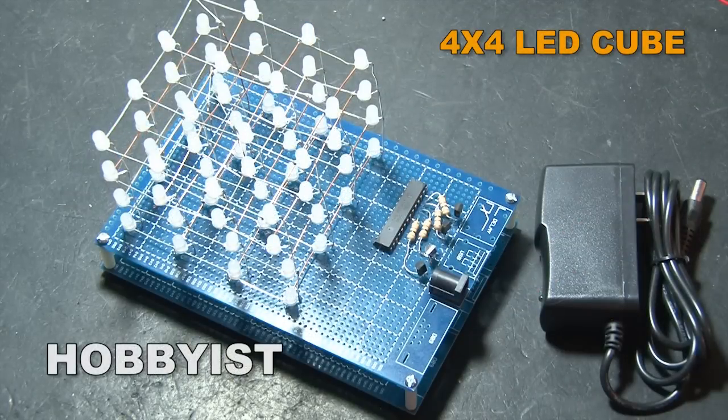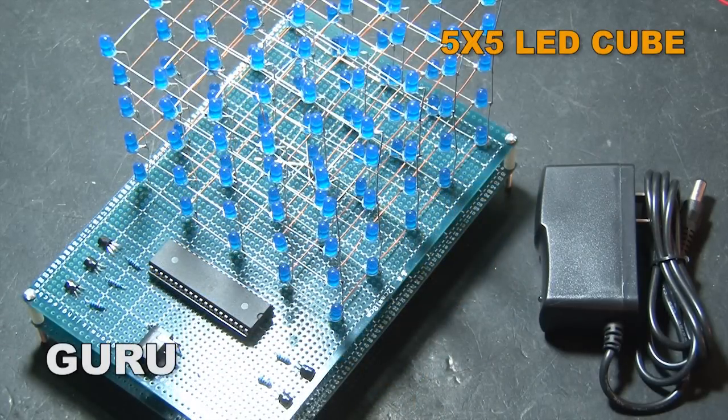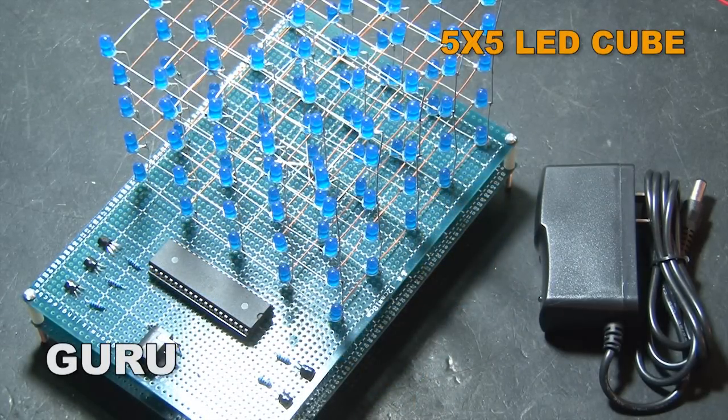The hobbyist kit includes everything you need to build a 4x4 LED Cube. This one's powered with a wall adapter. And the guru kit includes everything you need to build the impressive 5x5 LED Cube.